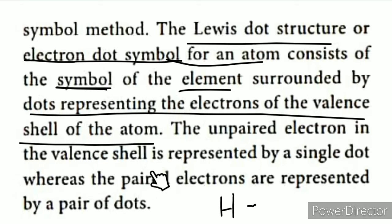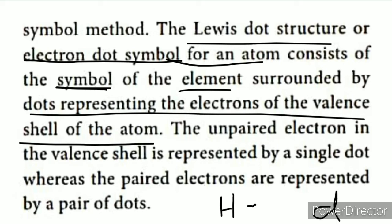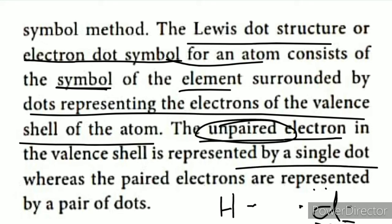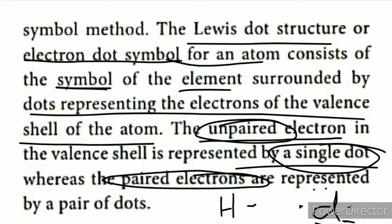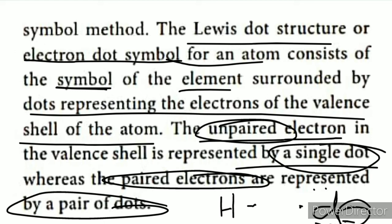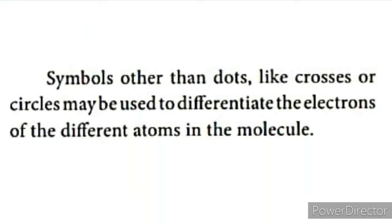The unpaired electron in the valence shell is represented by a single dot, whereas the paired electrons are represented by a pair of dots. For example, chlorine has 7 valence electrons — some are paired and one is unpaired. The unpaired electron in the valence shell is shown by a single dot, and paired electrons are shown by pairs of dots.